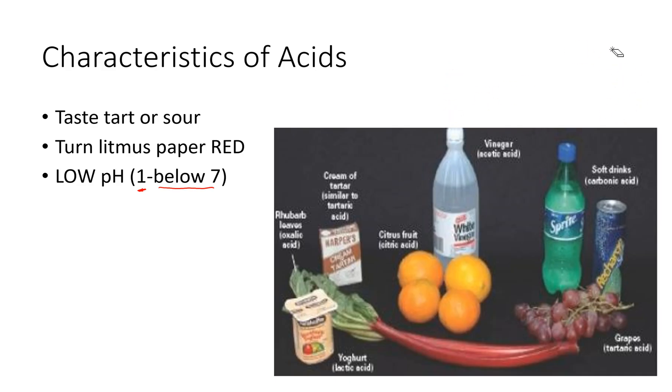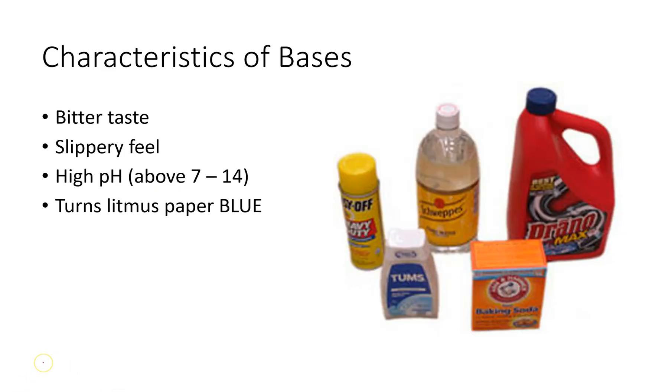So typically whenever we talk about acids and bases, everybody automatically assumes that acids are very dangerous, and that's true when we're in a lab. We have to make sure that we're practicing proper lab safety and assuming that everything is dangerous, because typically acids when we're in a lab they are clear and colorless. But you do come into contact with acidic things on a regular basis. So again, acids are sour, they turn litmus paper red, and they have a low pH between 1 and below 7.